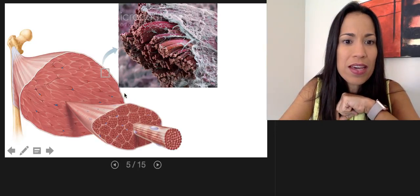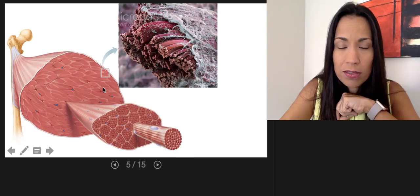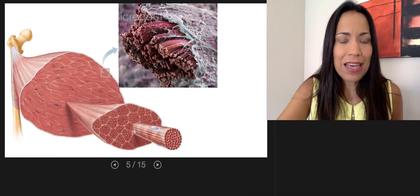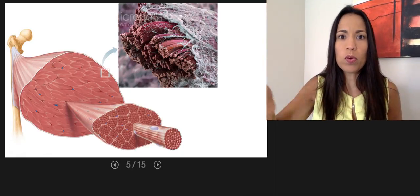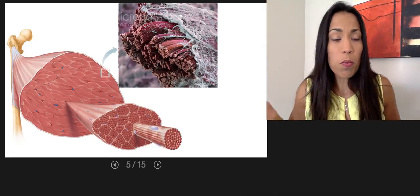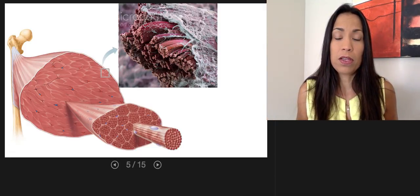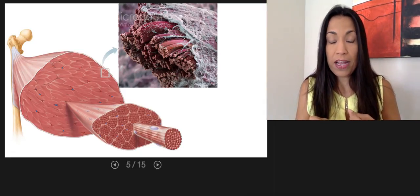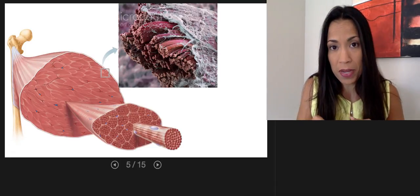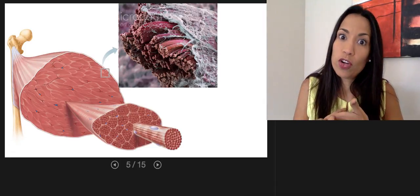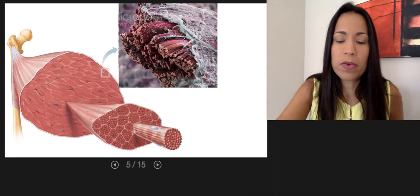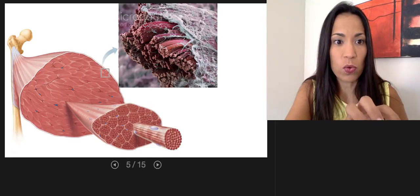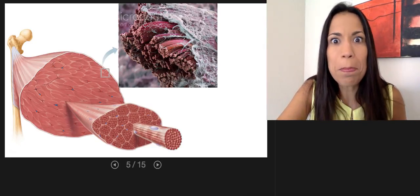Let's describe skeletal muscles as organs, not as tissues anymore. An organ is the combination of two or more types of tissues. In skeletal muscles we have muscle tissue, connective tissue, blood vessels lined by epithelium, and nerves consisting of nervous tissue. So we have all four types of tissues in these organs. Let's describe the structure of these amazing organs.